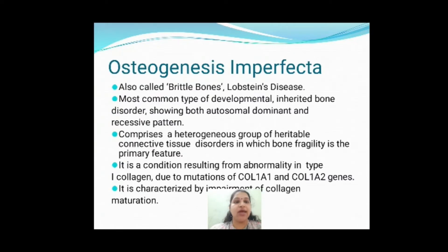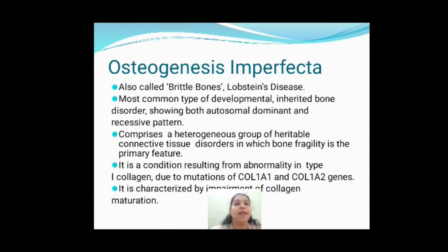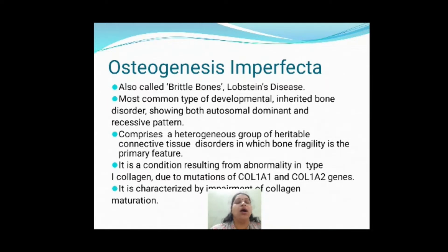The first disease we are going to discuss today is osteogenesis imperfecta. As the name indicates, 'imperfecta' means something is not perfect or abnormal, and 'osteogenesis' means the formation of bone is not going to be proper. Osteogenesis imperfecta is also called brittle bones or Lobstein's disease. It is the most common type of developmental inherited bone disorder — a hereditary bone disease. It shows both autosomal dominant and autosomal recessive patterns of inheritance.